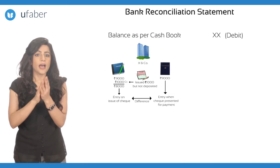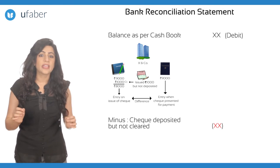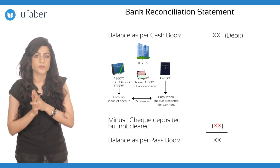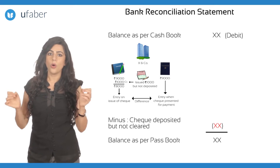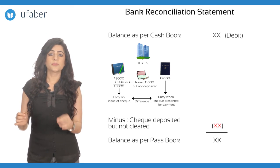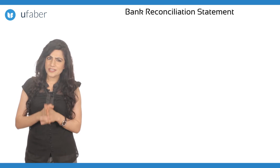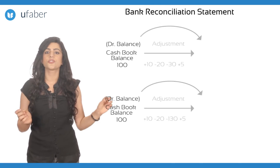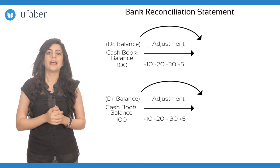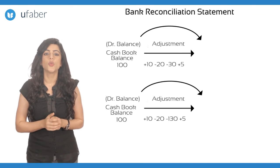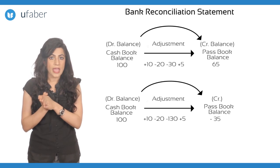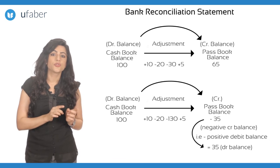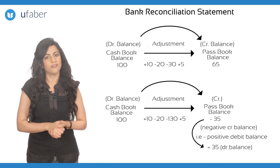In this case, the amount of the cheque should be subtracted from the cash book balance to arrive at the balance as per the pass book. After making all the adjustments, the balance as per the other book is obtained. If we start from the debit balance of the cash book and after all adjustments the balance arrived at is positive, then it is known as credit balance as per the pass book. If the balance is negative, it is said to be debit balance as per the pass book, and vice versa.